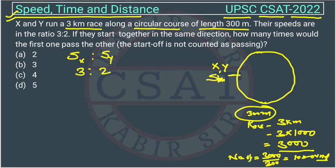They start together in the same direction. How many times would the first one — that is X — pass the other? The start off is not counted as a pass.